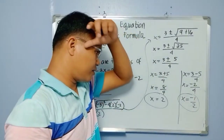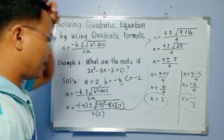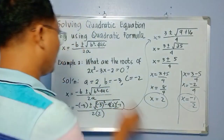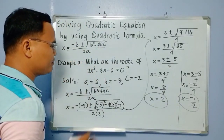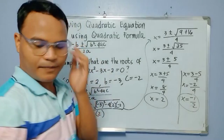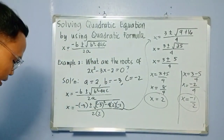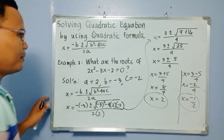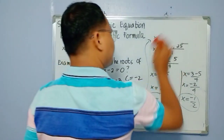These are the two values of x: 2 and negative one half. These are the roots of 2x squared minus 3x minus 2 equals 0. We have another example.